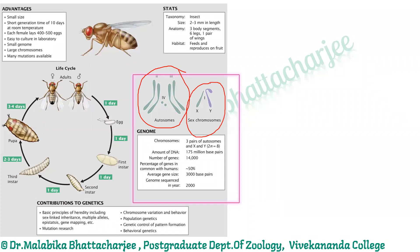If we consider the sex determination pattern of humans, we know that the presence of the Y chromosome in an individual determines that individual will become a male. However, when we are talking about Drosophila, this fact is not true. Even if a Y chromosome is present, it has been seen that Y is not the determining factor — it doesn't determine whether the fly will be a male or female. In Drosophila, Y chromosome is not the essential factor for sex determination, as compared to humans where Y is the essential factor.